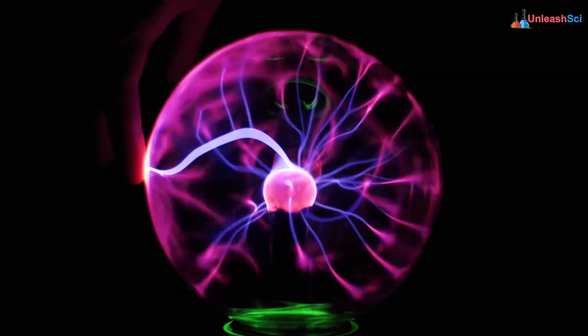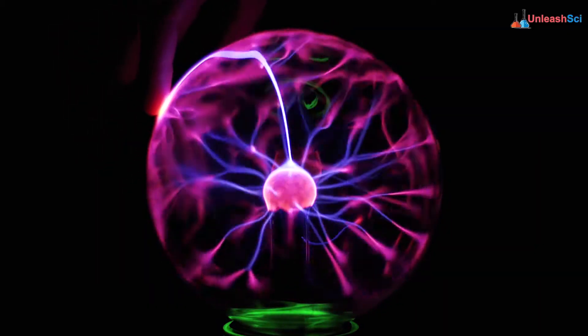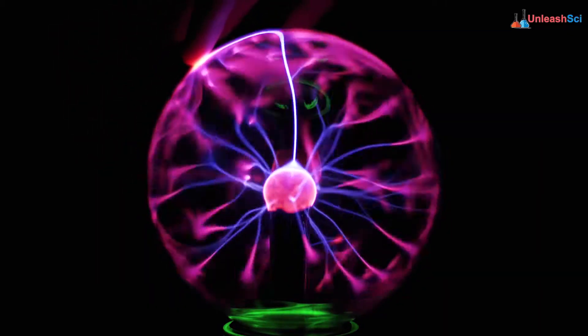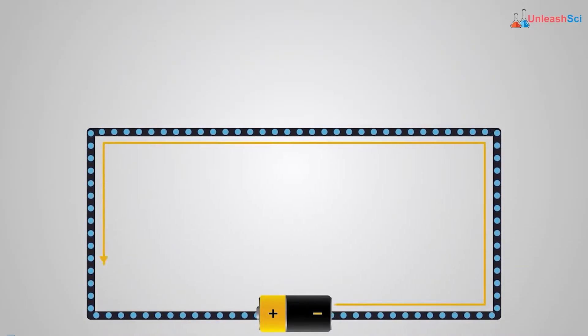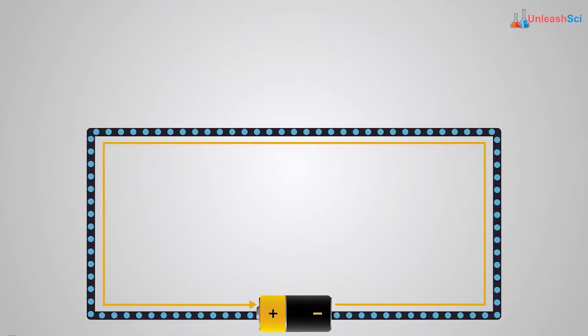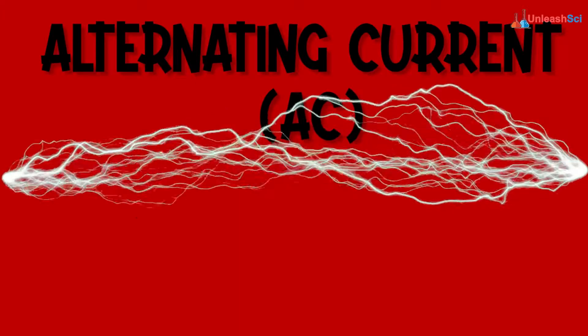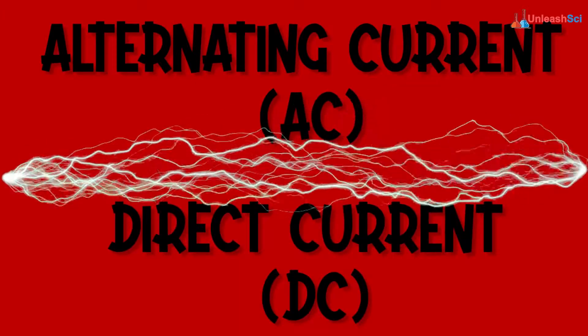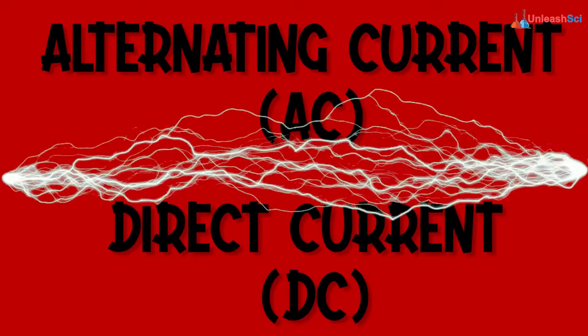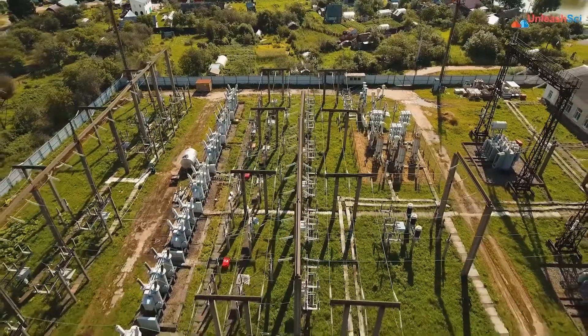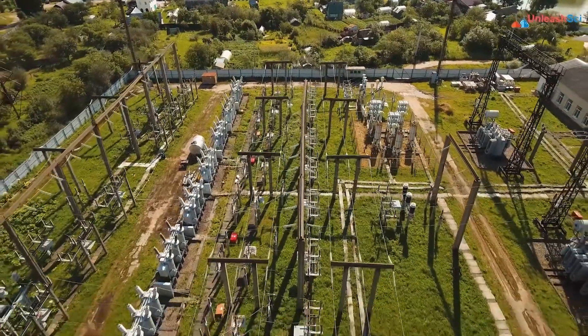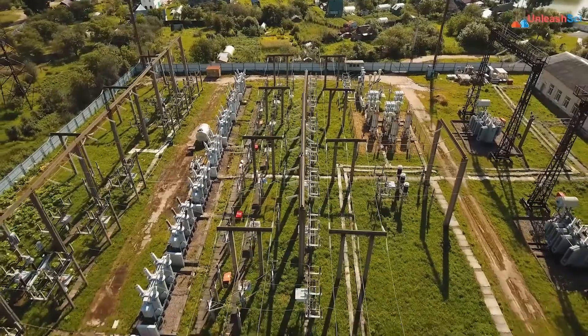What is electricity or electric current we are talking about? An electric current is a flow of electric charge in a circuit. But do you know, electricity comes in two forms: alternating current and direct current. Both are essential to enable the functioning of our electronics.